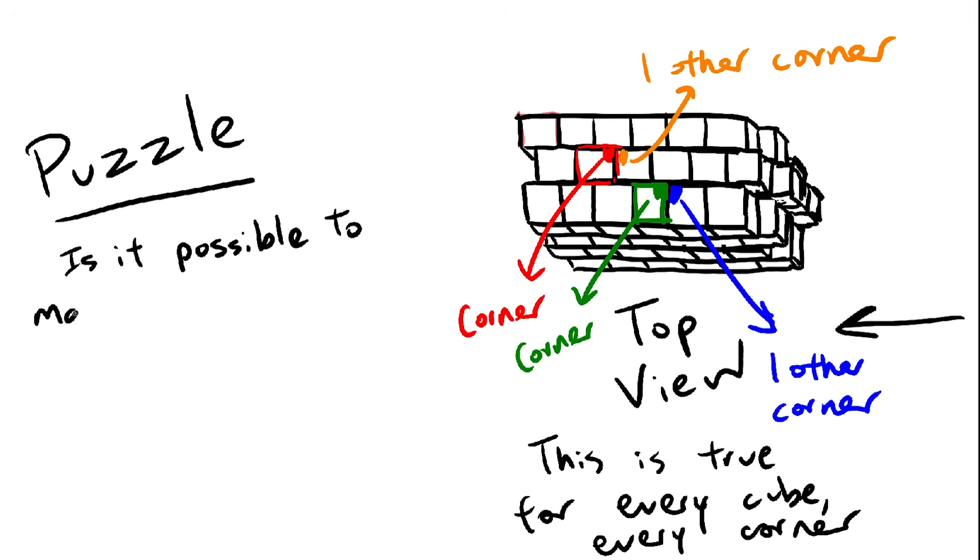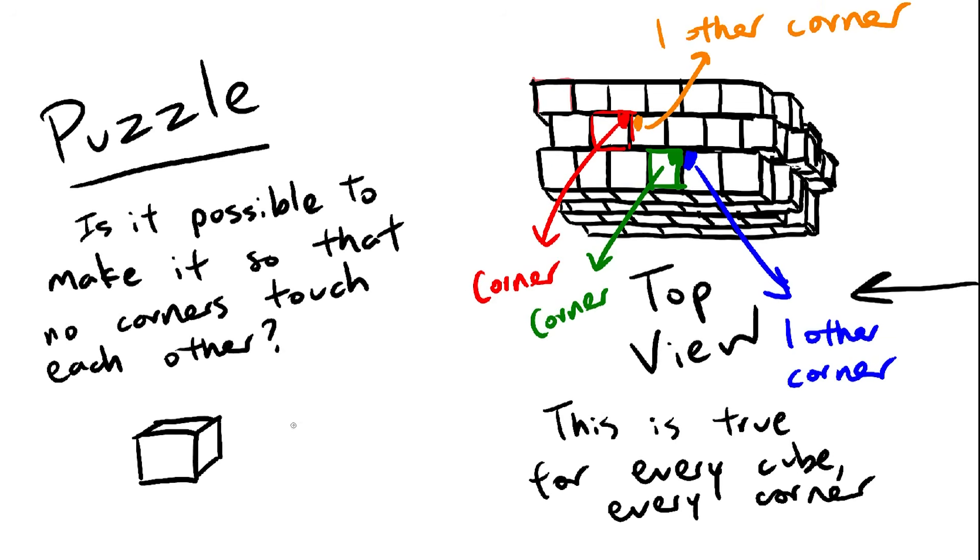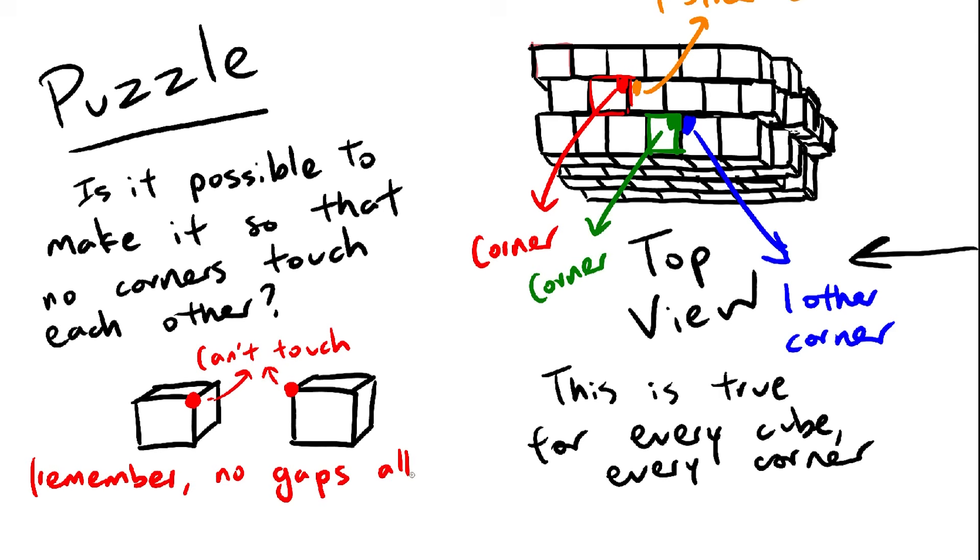Can we go lower? Is it possible to get a configuration where no corners are touching each other? If yes, find that configuration, and if no, prove that you can't find one. Have some time to think.